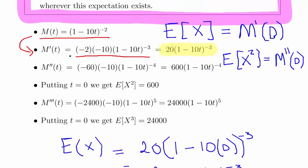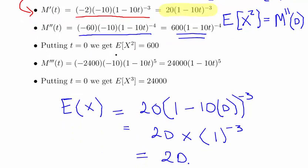Now we differentiate again to get the second derivative. We get minus 3 times 20 times minus 10, which is 600, times (1 minus 10t) to the power of minus 4. Evaluating at t = 0, the bracket becomes 1, so E[X²] = 600, confirming the required result.